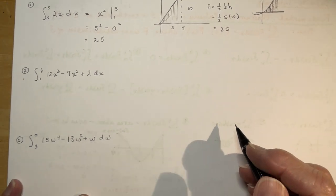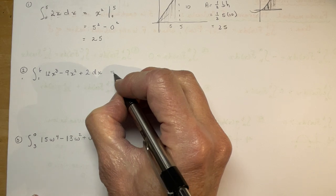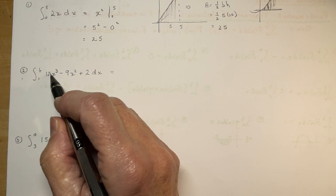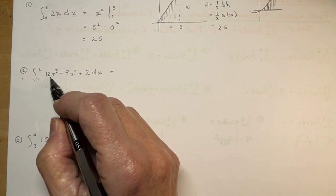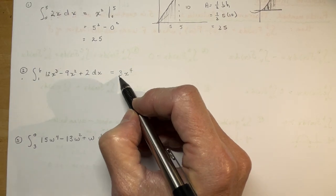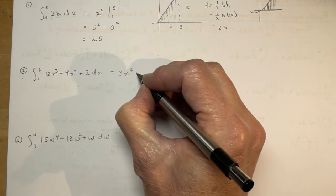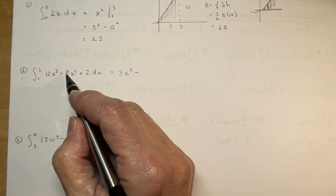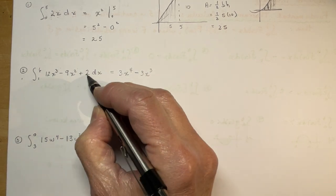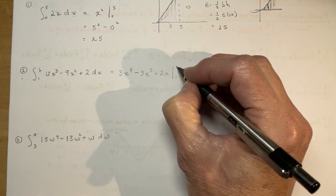I'm going to take the antiderivative of 12x³: add 1 and divide, so 3 plus 1 is 4, and 12 divided by 4 is 3, giving 3x⁴. You can double-check: 4 times 3 is 12, reduce by 1, and I get 12x³. For the next term: add 1 gives 3, 9 divided by 3 is 3, and it's negative, so minus 3x³. The last term is plus 2, giving 2x. I'm evaluating between 1 and 6.